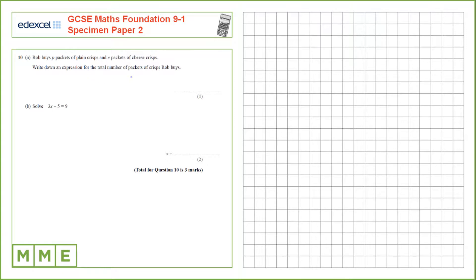Question 10. Rob buys p packets of plain crisps and c packets of cheese crisps. Write down an expression for the total number of packets of crisps Rob buys.